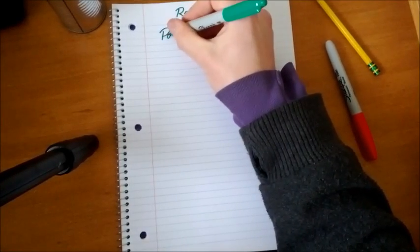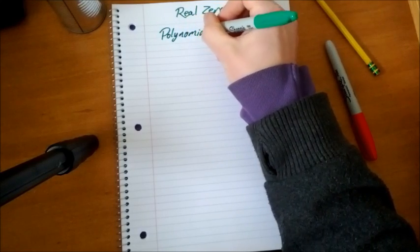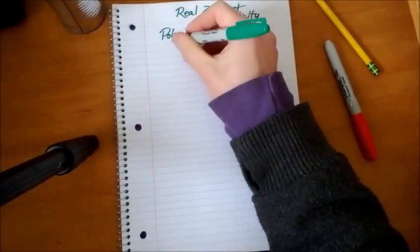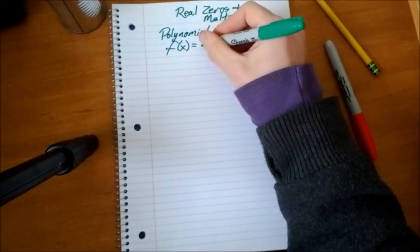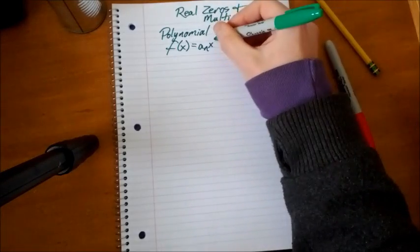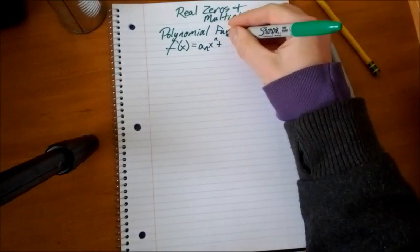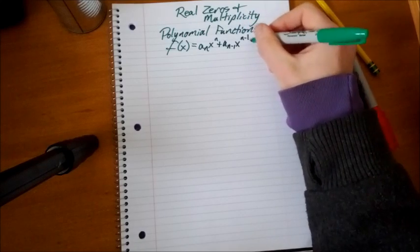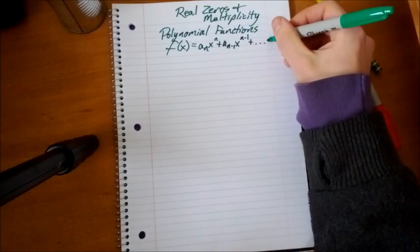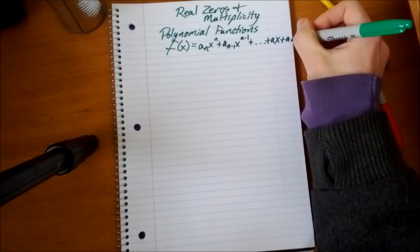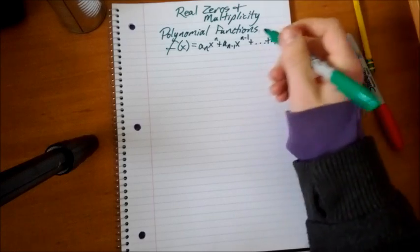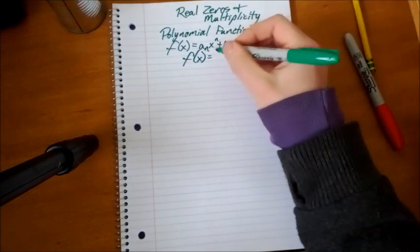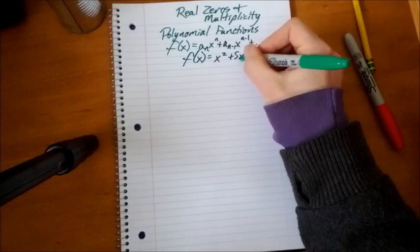We're going to start out with a little refresher on polynomial functions because you need to know about them in order to do this. A polynomial function has the format a to base n times x to the n power plus a base n minus 1 times x to the n minus 1 plus dot dot dot, a base 1 x plus a to the 0, that being a constant. An example of this would be f(x) = x² + 5x + 6.